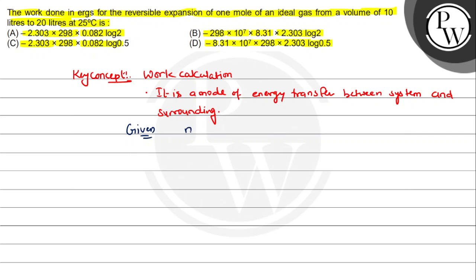Given values: n = 1 mole, temperature is 25 degrees Celsius, which converts to 25 + 273 = 298 Kelvin. Volume V1 = 10 liters and V2 = 20 liters. Now for reversible expansion: